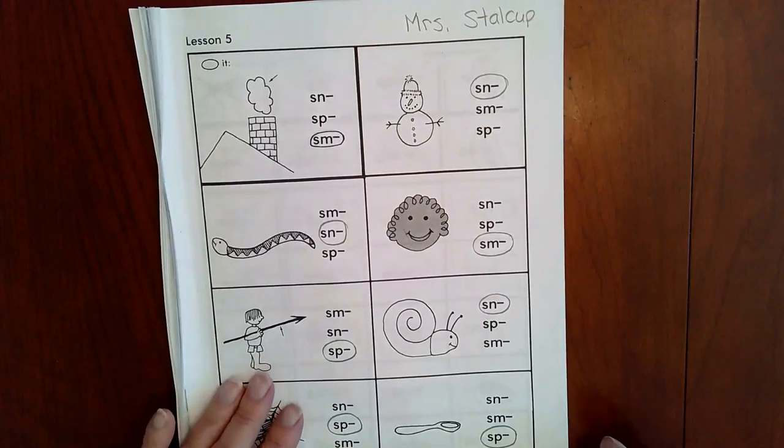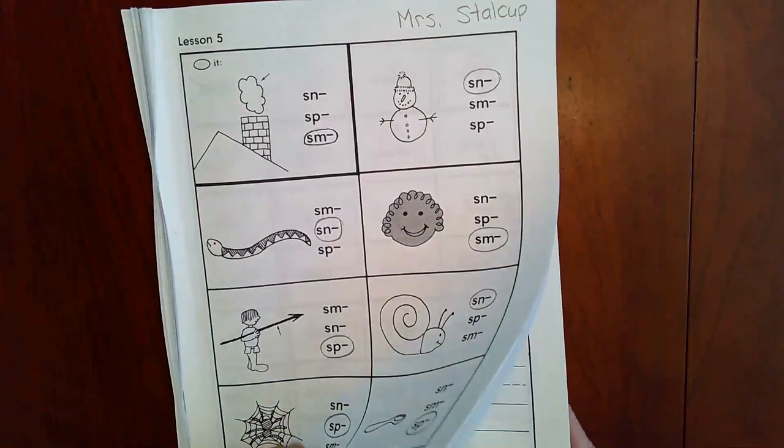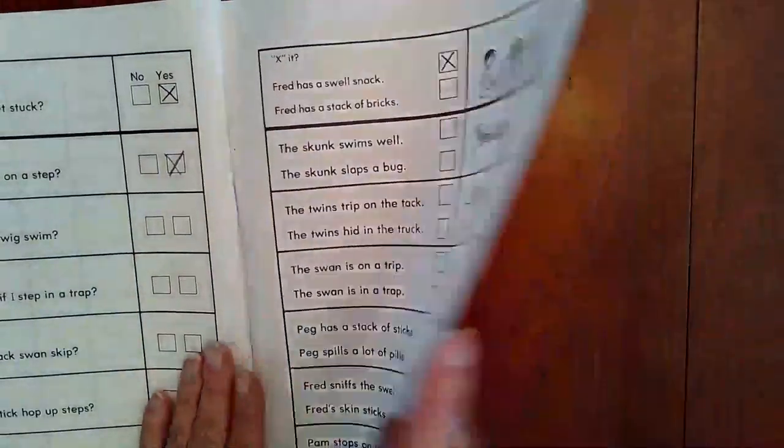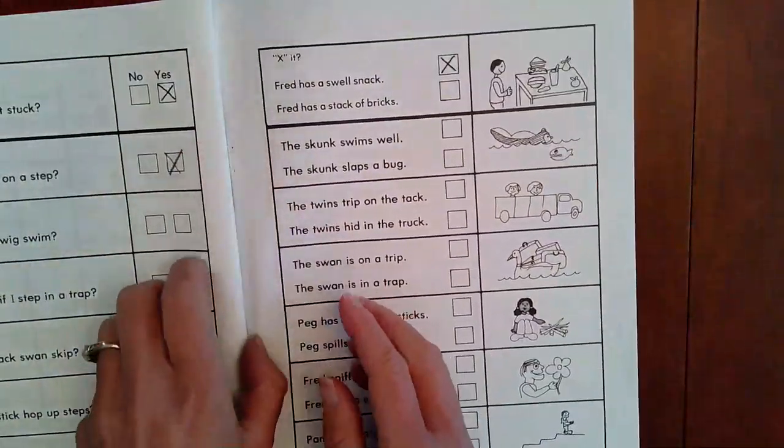Today we're going to finish up our blending packet. So turn to page 53, the very last front and back, but the last page in your packet.